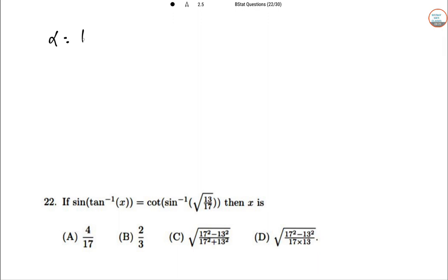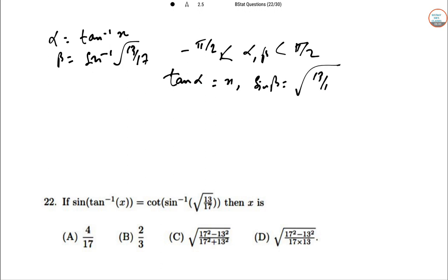Let α = tan⁻¹(x) and β = sin⁻¹(√(13/17)). Then for -π/2 to π/2, both α and β will exist. tan α = cos β / sin β.